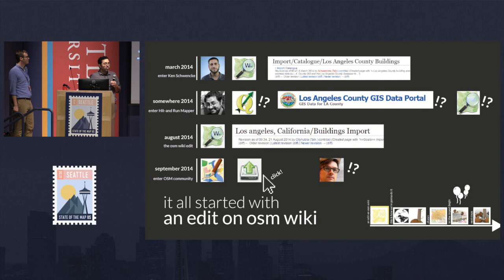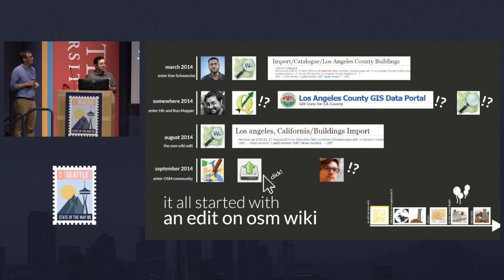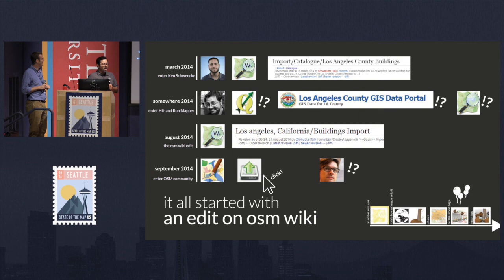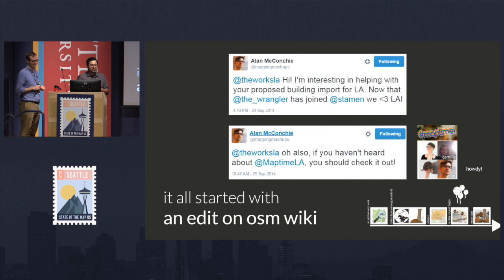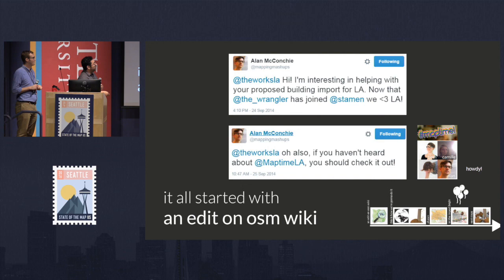Then some guy who was a hit-and-run mapper — myself — discovered QGIS and the data portal. I was like, oh my God, there's all this data and OpenStreetMap. At that point I thought: all these building outlines — LA doesn't really have buildings on there at all — so I'm going to take it further and get people to start contributing. I kind of contributed in August 2014. Then Alan had some sort of mechanisms that monitor OpenStreetMap. I uploaded a bunch of buildings and he just popped out of nowhere and contacted me saying he's interested in helping with the building import. This was September 2014, and he introduced me to MapTime LA.